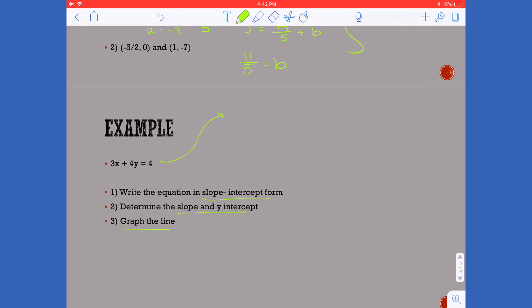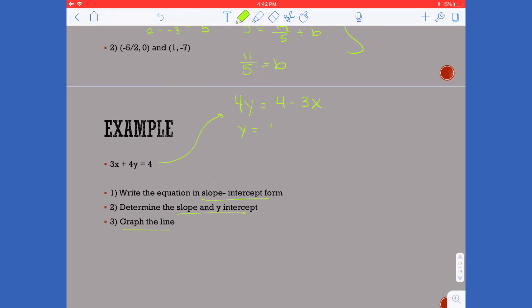So starting with slope intercept form I have 3x plus 4y equals 4 and I want to get my y term by itself. So I'm going to begin moving my terms over to the other side in order to get my y by itself. And to write this a little neater, that is the same thing as saying 4 over 4 minus 3x over 4.